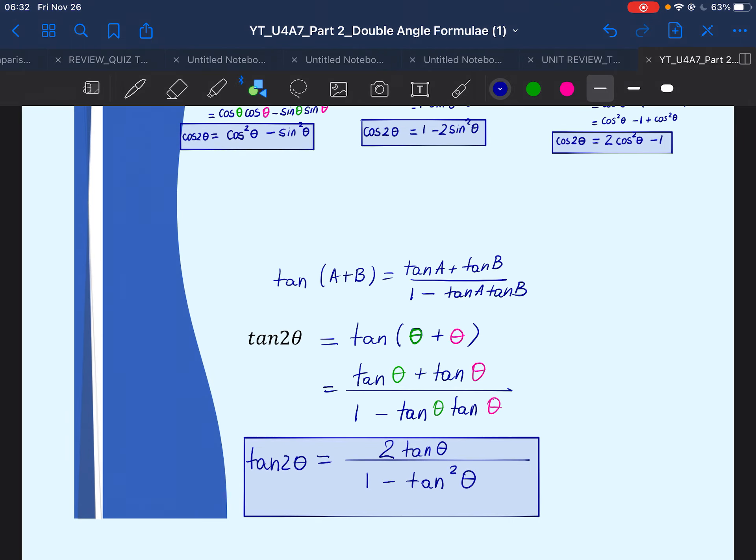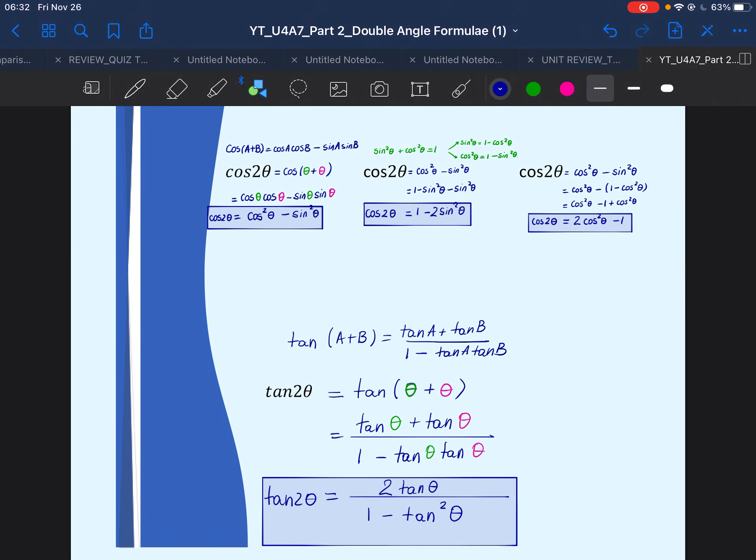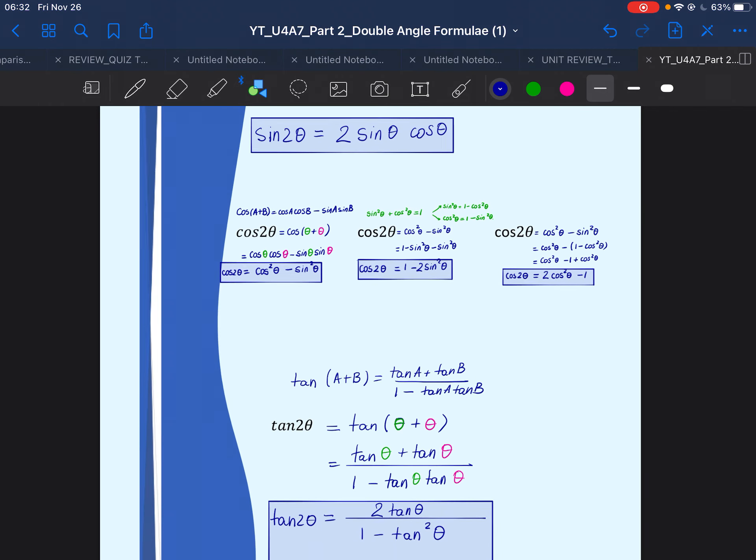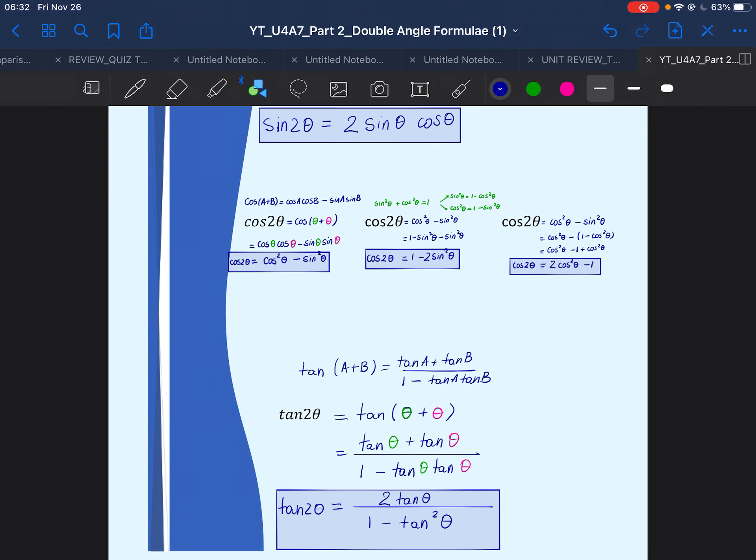So, these are the three formulas for the primary trig ratios of double angles. In the next lesson or in the next part of the lesson we'll look into some examples. Thank you for watching.